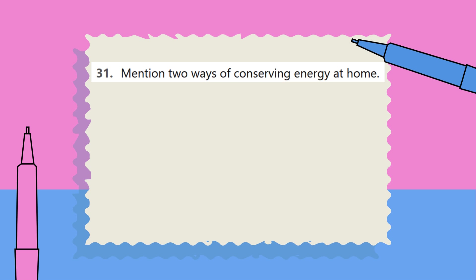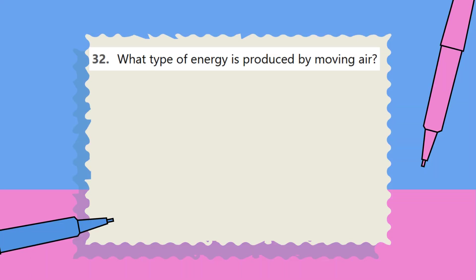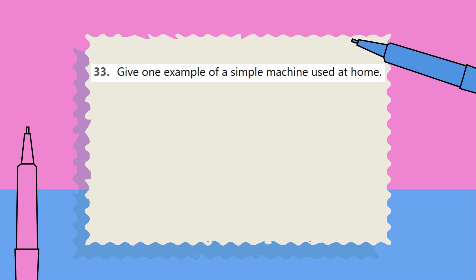Question 31: Mention two ways of conserving energy at home. Question 32: What type of energy is produced by moving air? Question 33: Give one example of a simple machine used at home.